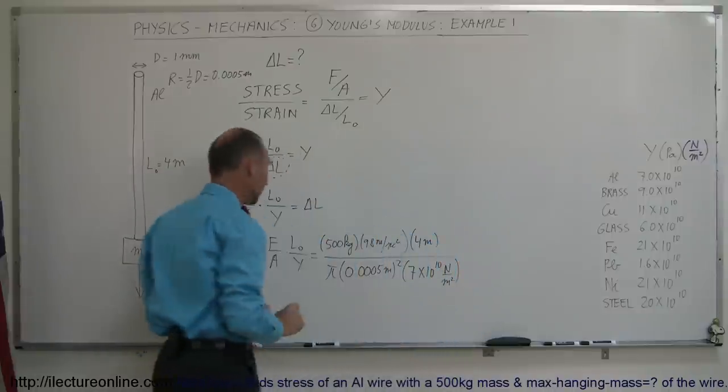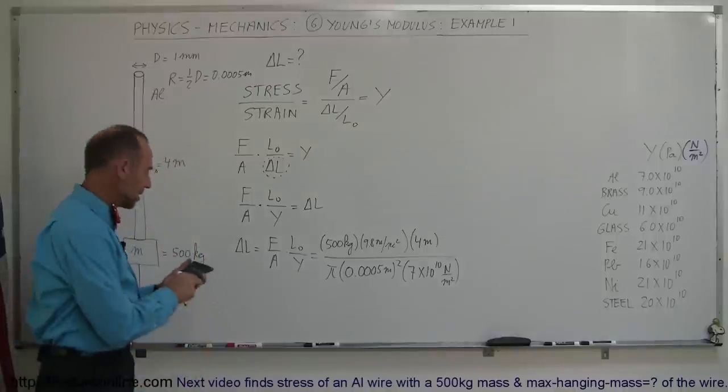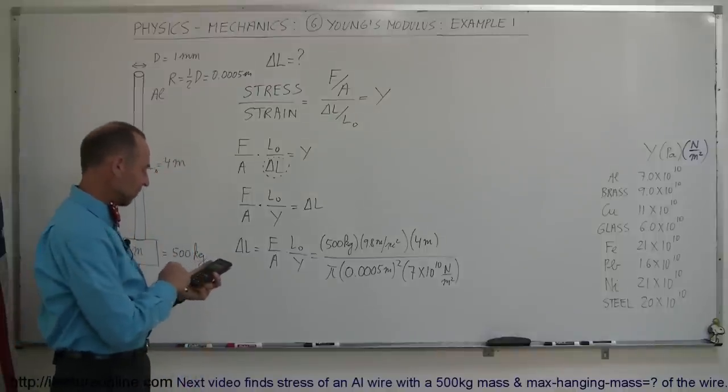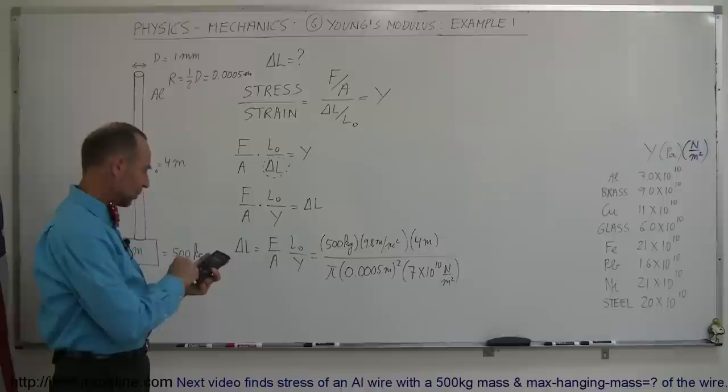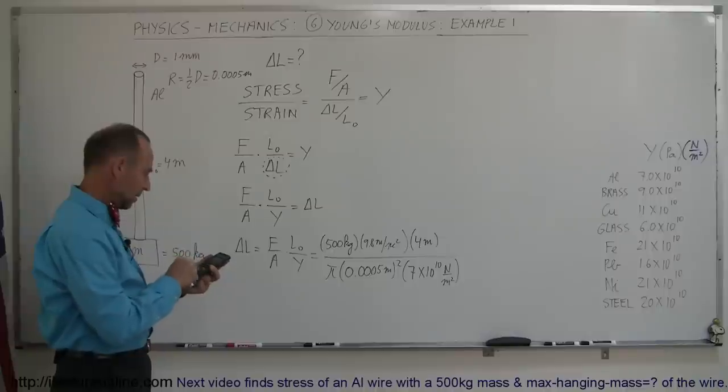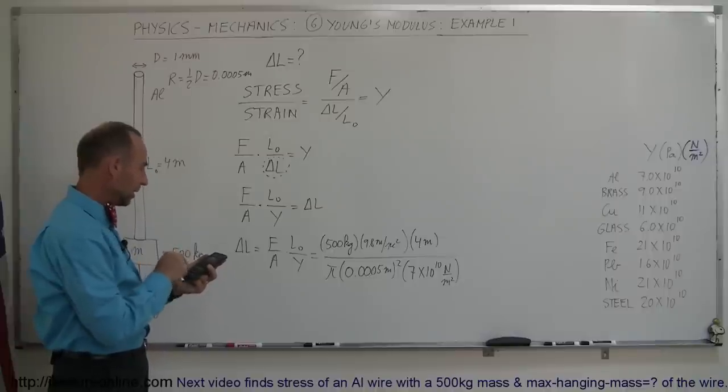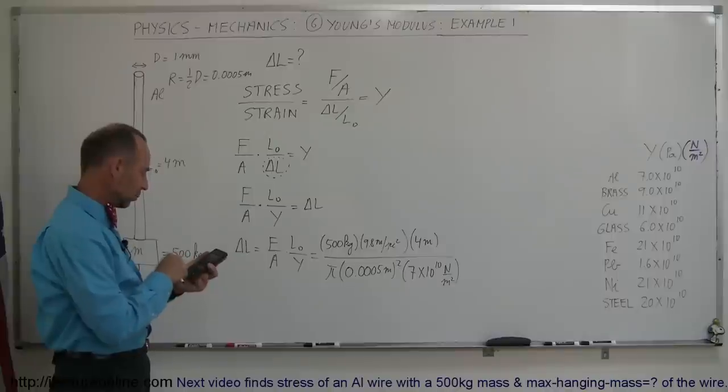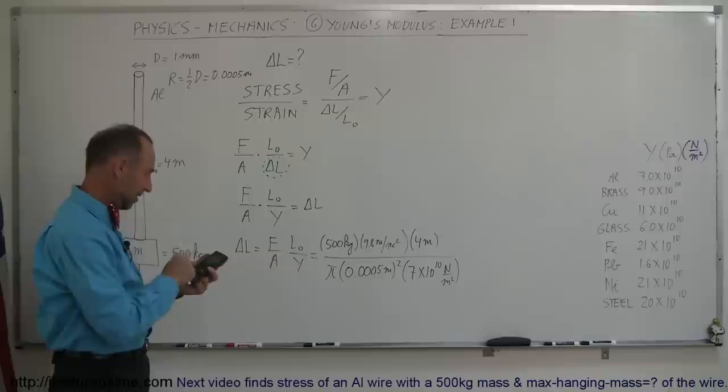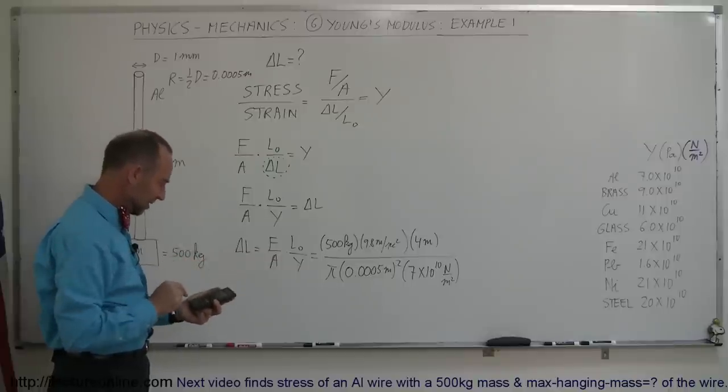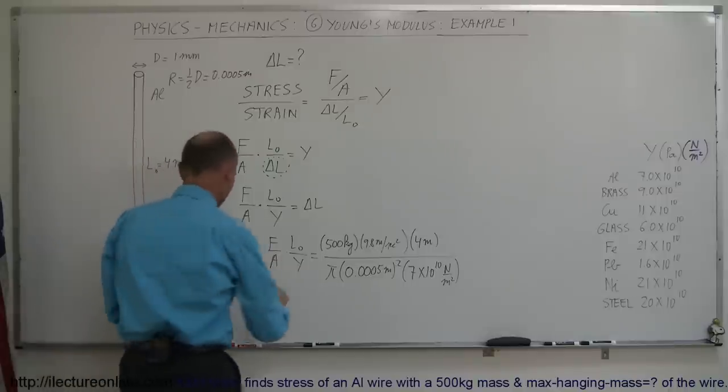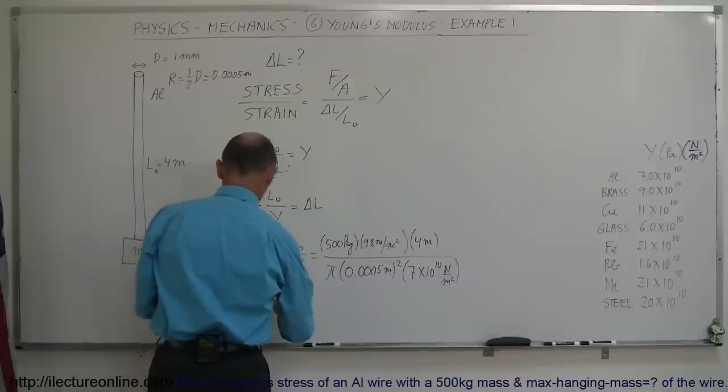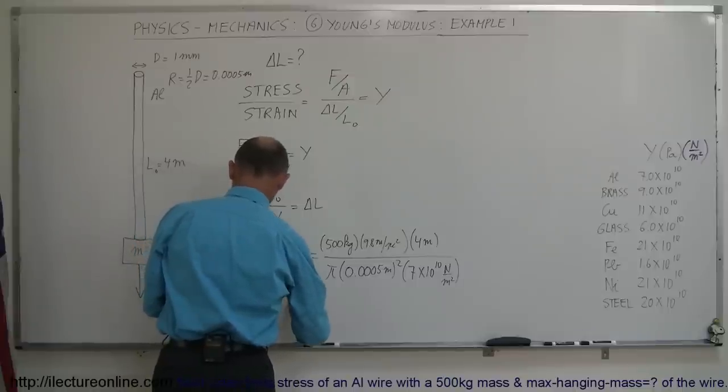All right, that will give us a change in length in terms of meters. Let's find out what it is. So, 500 times 9.8 times 4 divided by pi divided by 0.0005 squared and times 1 divided by 7e to the 10th equals. And, wow, let's see here. That is equal to 0.357 meters.